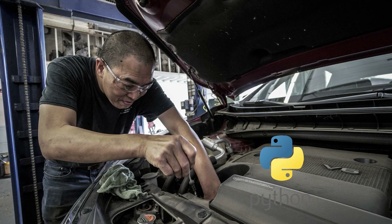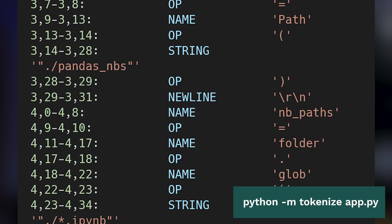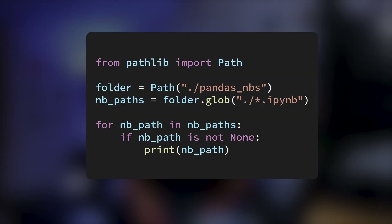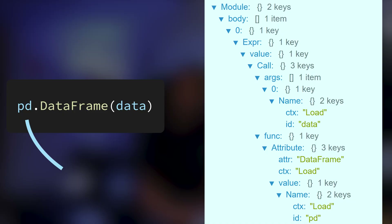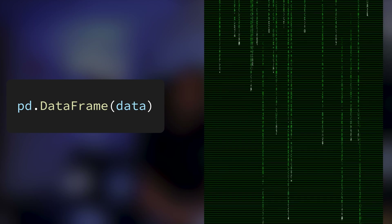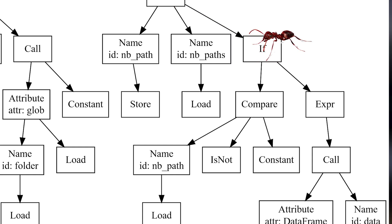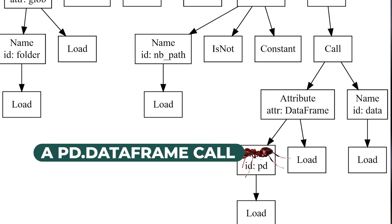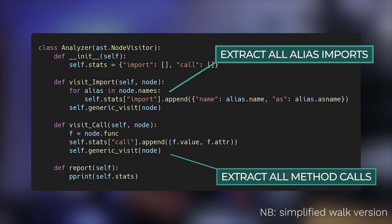Have you ever wondered how Python is run? Python code is first parsed and tokenized from a list of characters into words Python can understand, like if, while, or variable names. Then those tokens are used to build an abstract syntax tree — a high-level representation of the program code. Finally, the AST is compiled into bytecode. Python provides the AST module natively to help parse and traverse the syntax tree.